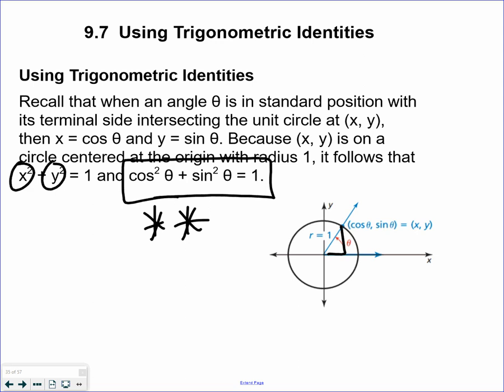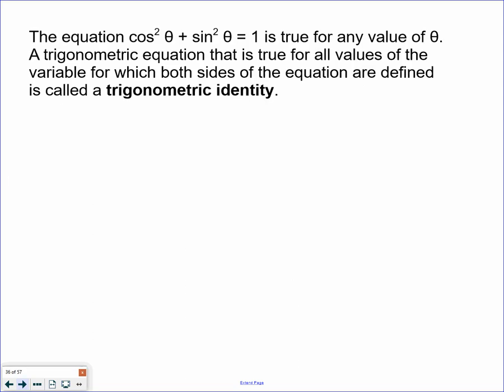It's one of many trig identities that you will have to know next year, more so than now. This is a lead-in to things you're going to do next school year. The equation cosine squared x plus sine squared x equals 1 is true for any value of theta. A trigonometric equation that is true for all values is known as a trig identity. There is a whole page of trig identities that we will be using.